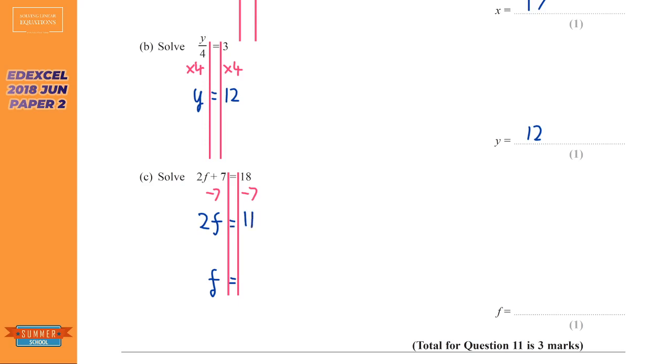Now we can deal with that 2. So it's a times 2. What's the opposite of times 2? Well, we divide by 2. So we divide by 2 on the left, and we've got to do it to the right. And 11 divided by 2 would be 5.5 or 0.5 or 5.5. Either is an acceptable answer.